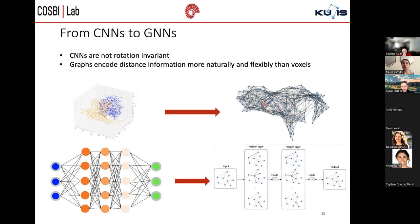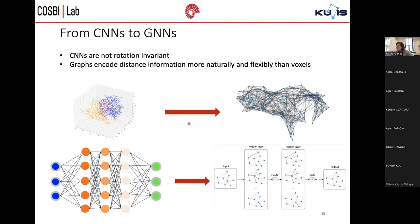We turned our focus from CNNs to GNNs. In our case, for proteins rotation is important because two proteins can interact only through an interface. And if you rotate one partner, they will not interact because they couldn't find the interaction site, the interaction site will not be correct. Also, graphs encode distance information more naturally and flexibly than voxels or point clouds. So we decided to go with GNNs.